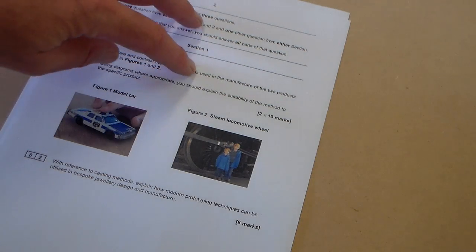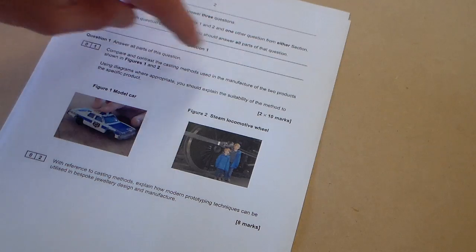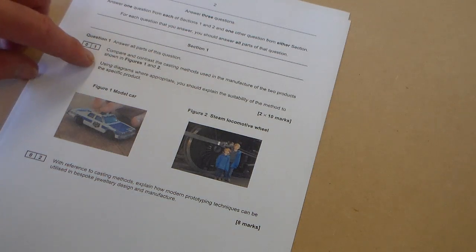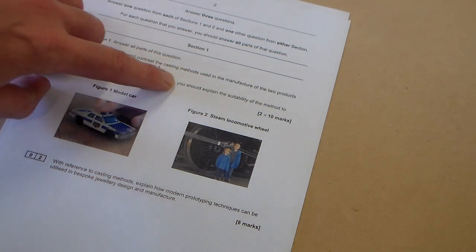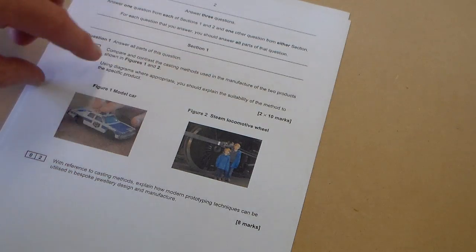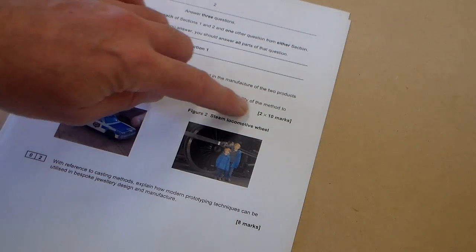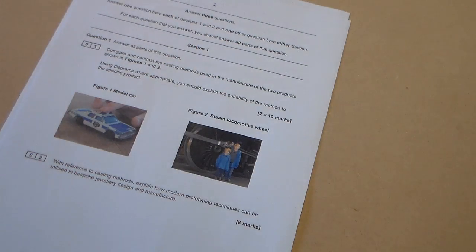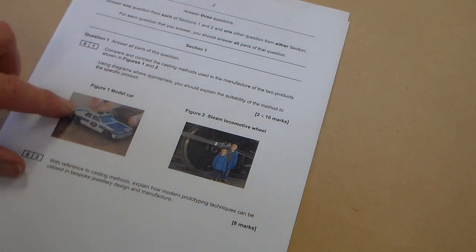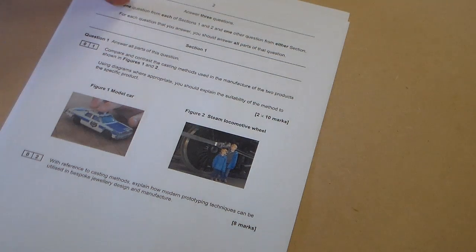It says compare and contrast the casting methods using the manufacture of the two products shown in figures 1 and 2. Use diagrams where appropriate. You should explain the suitability of the method to the specific product. So it's 2 times 10 marks, 20 marks, a lot of marks.